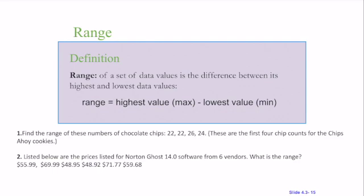For example two, listed below are the prices for Norton Ghost 14 software from six vendors. I'm going to take my largest value minus my smallest value. Remember, we've got to look closely. This one's the smallest. If I take 71.77 minus 48.92, that gives me 22.85. I have a range of $22.85.